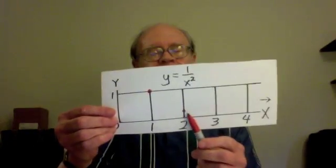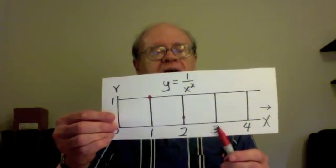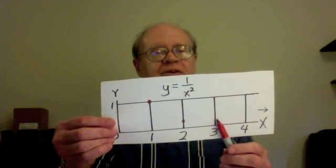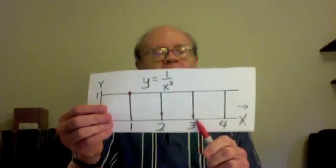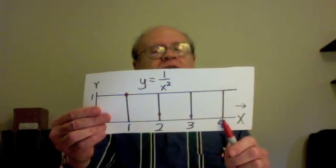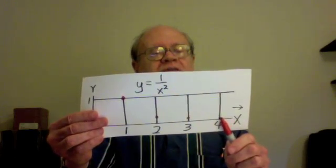When x is 3, I go up only 1 ninth instead of 1 third, because 3 times 3 is 9. That's that point. And when x is 4, y is not 1 fourth, it's only 1 sixteenth. That's very close to the x-axis, but still above it.